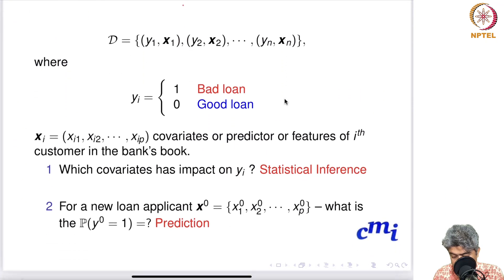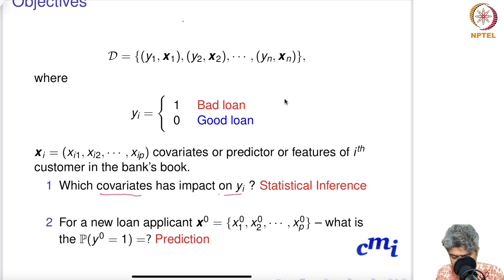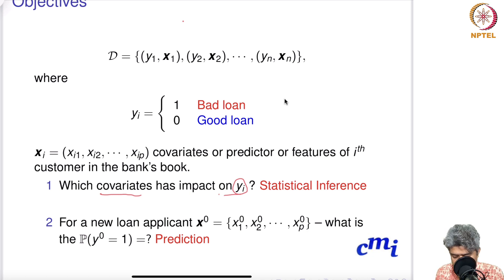Given this setup, there are two kinds of questions you will be looking at. The first question is: which covariate has an impact on yi — that is, which covariate has an effect on deciding whether a loan is going to be good or bad? This kind of question typically falls in the category of statistical inference.